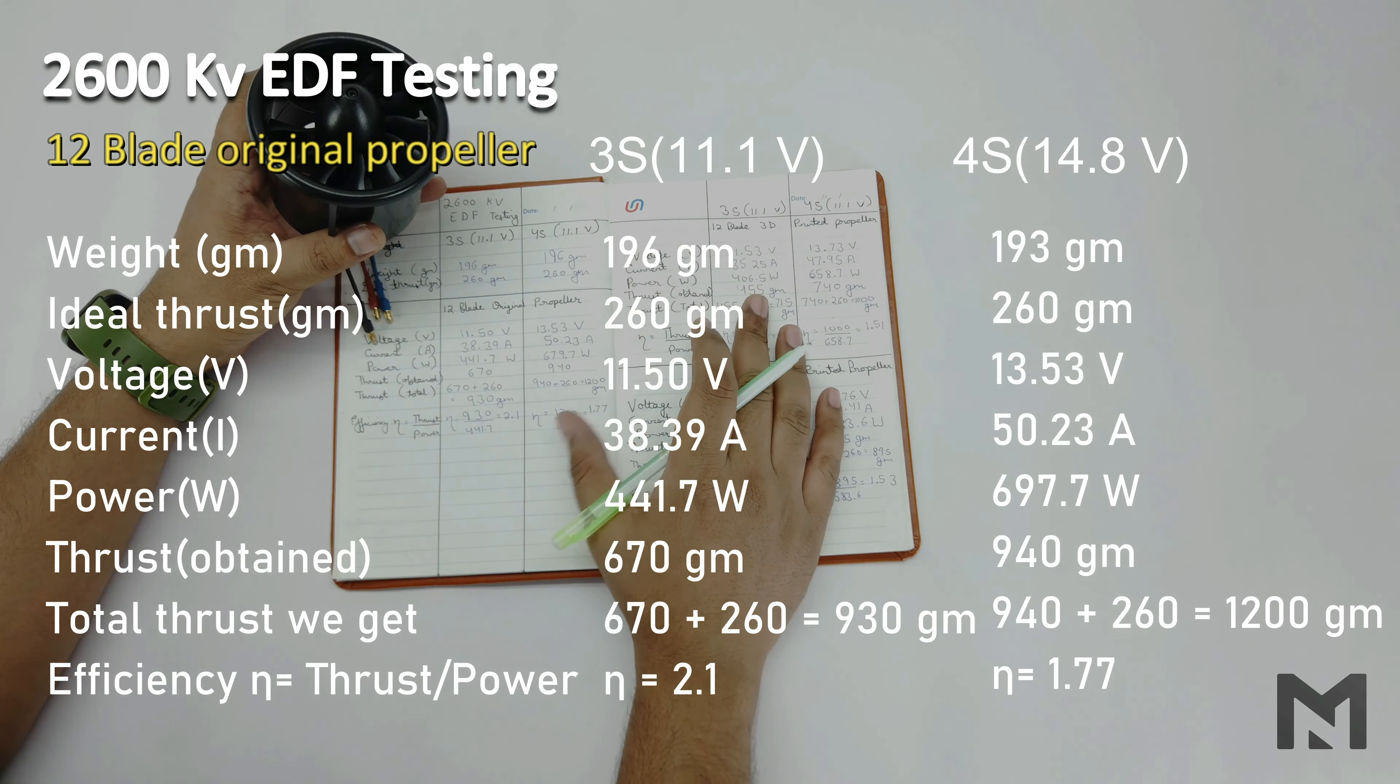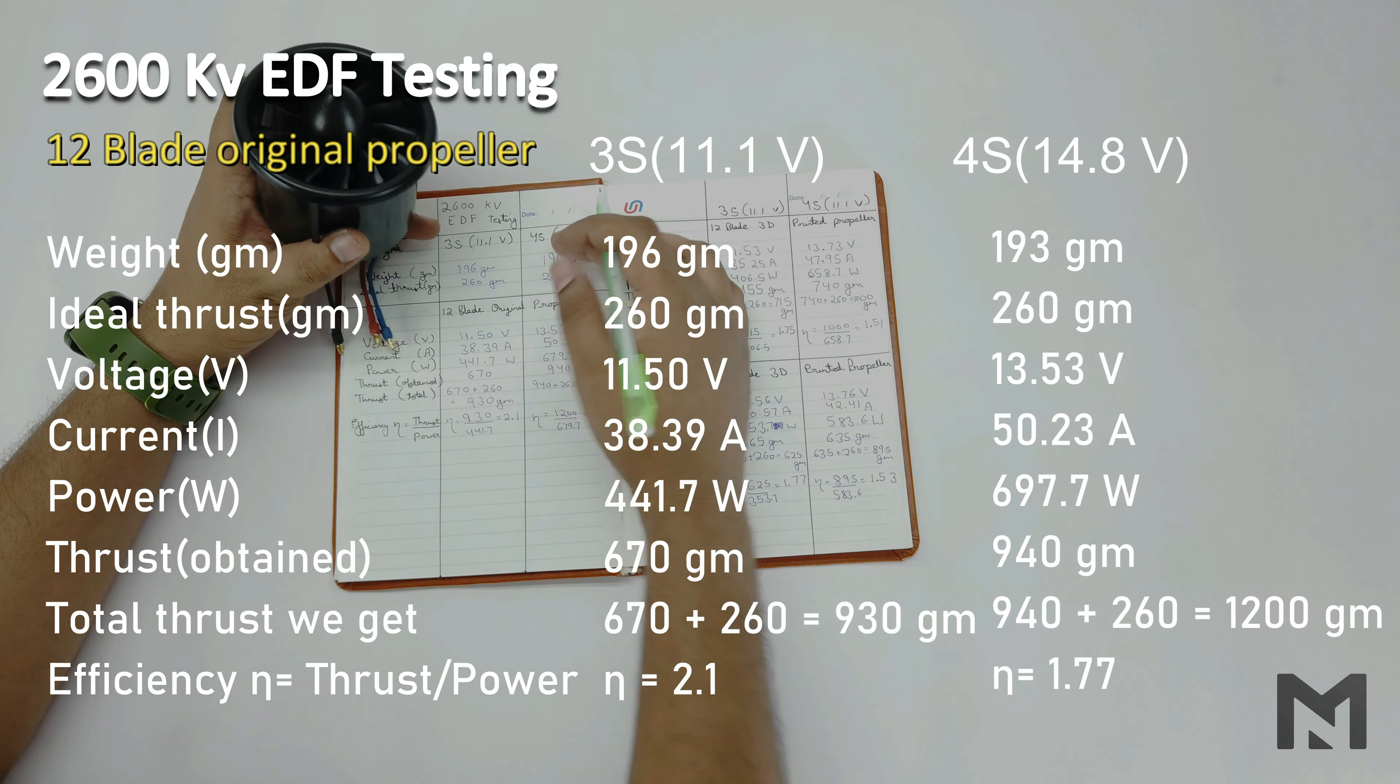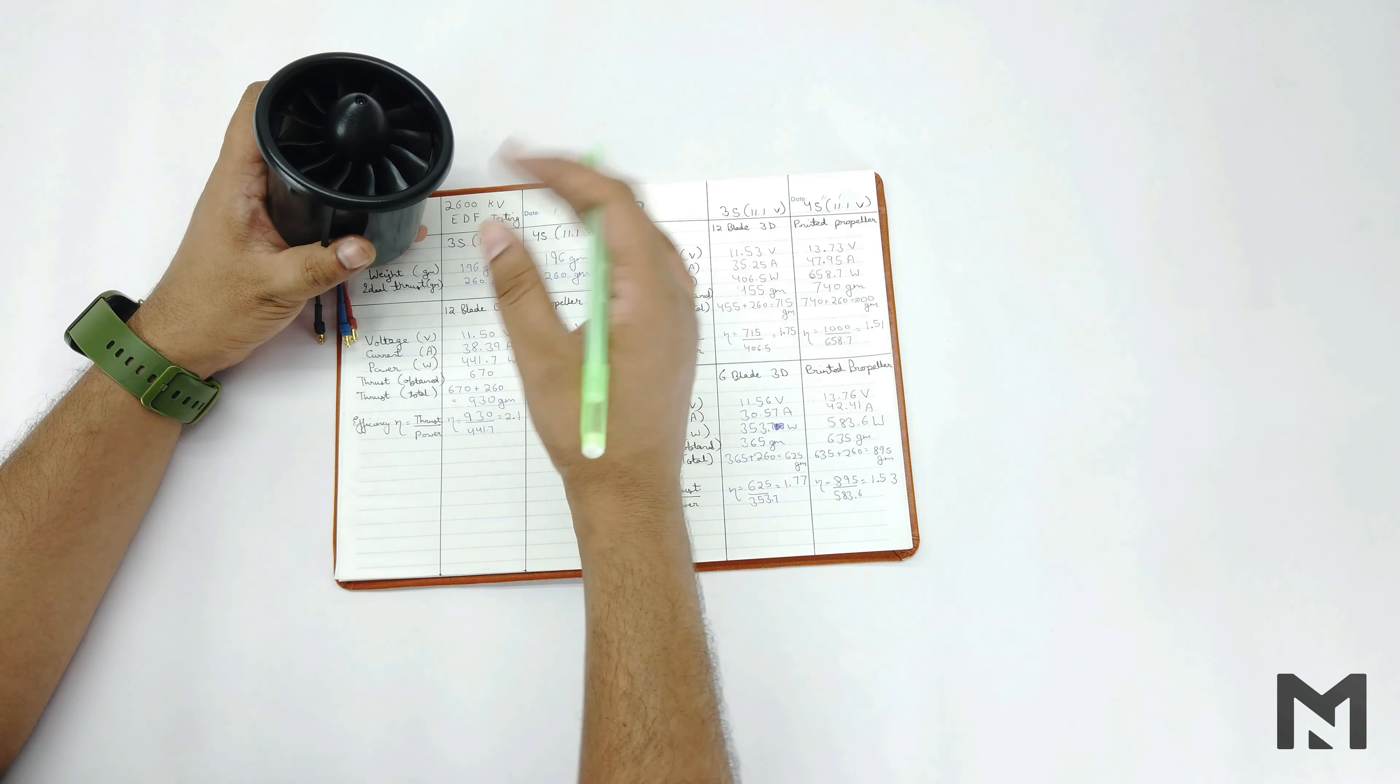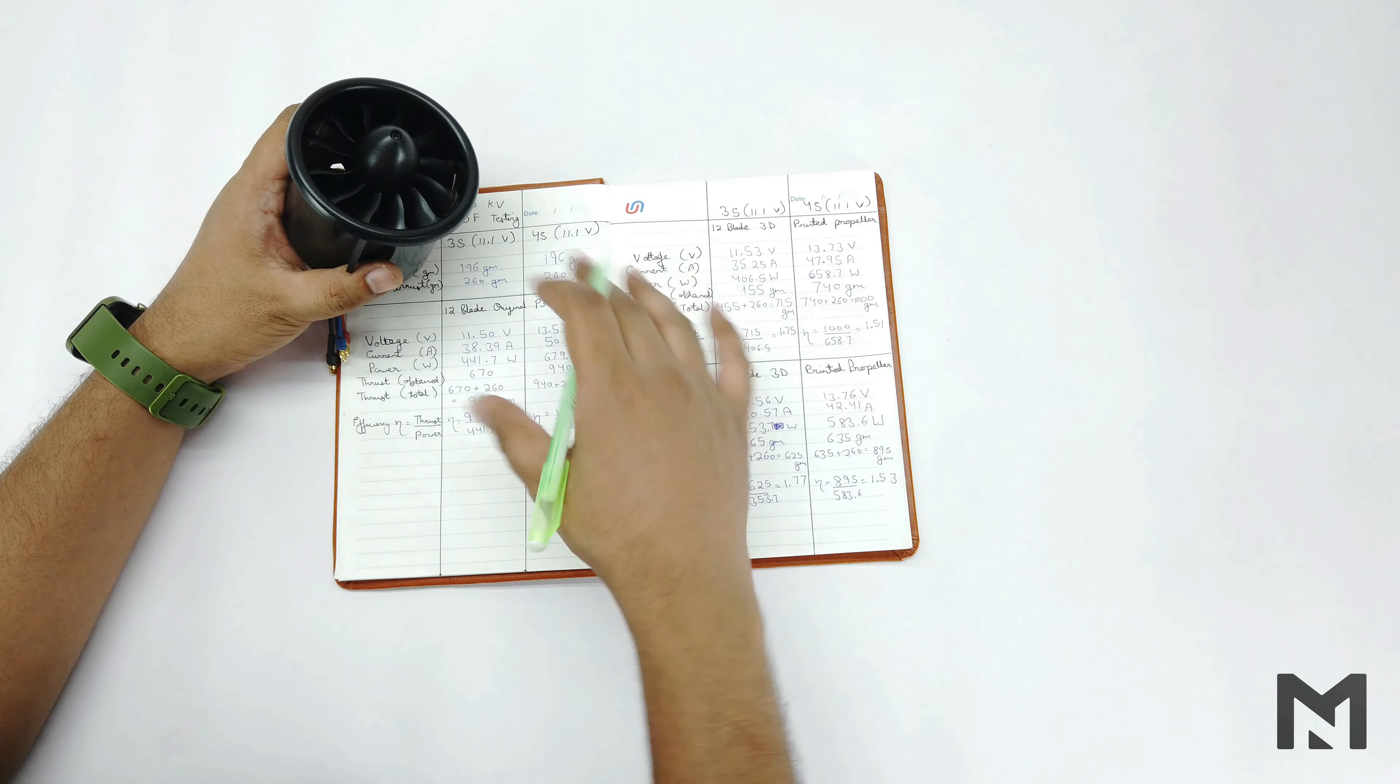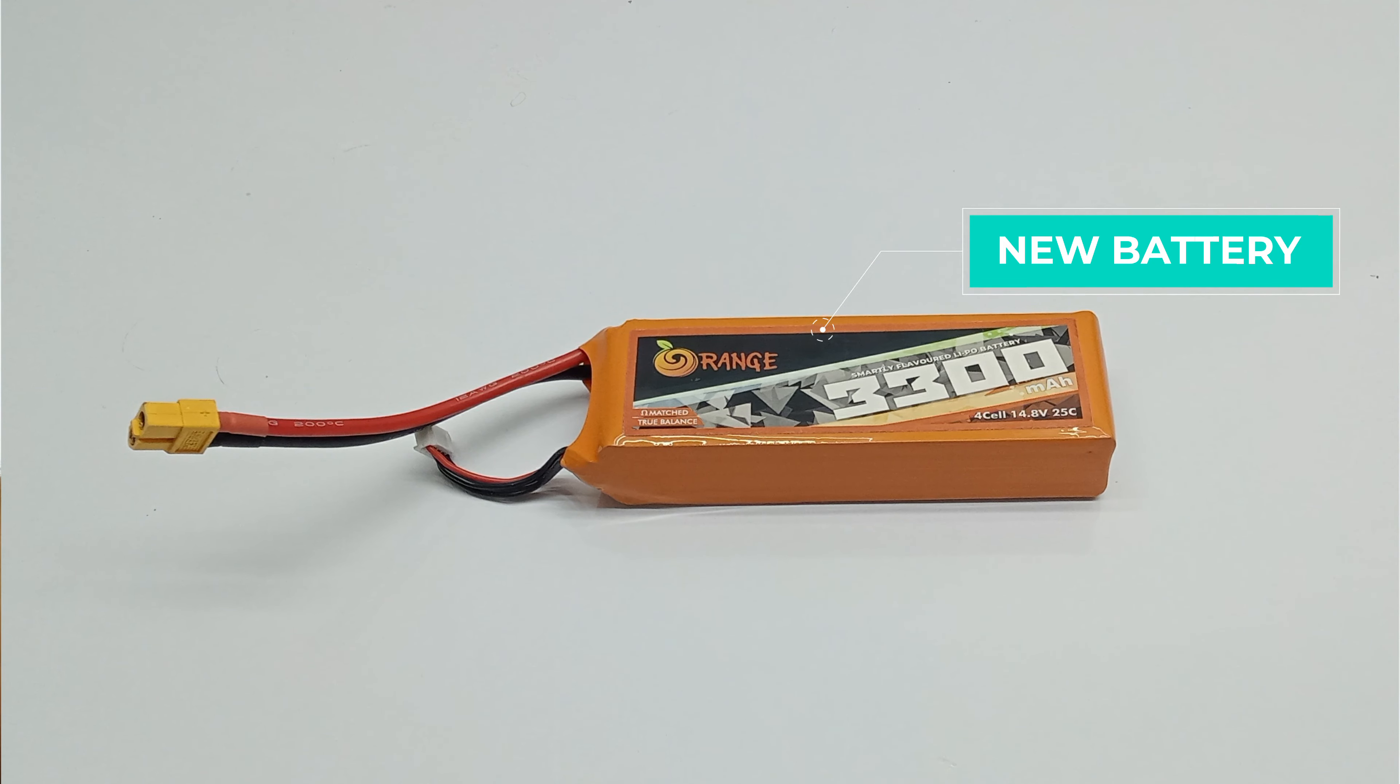Using a 4S battery, it gave a thrust of 1200 grams, which is quite low if compared to its rated thrust which was around 1800 grams. But we got 1200 grams at an efficiency of 1.77. One thing to be noted: my battery is quite old, so its voltage drop came to 13.5V approximately when I recorded the readings. So in my upcoming videos, I will definitely use a new battery and then I will check the thrust again.